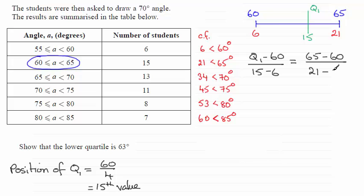So what we've got then is Q1 minus 60, all divided by 9, equals 5 over 15. And so just rearranging this for Q1, we therefore have Q1 equals 9 times 5 thirteenths, and then plus 60. And if you work this out, you get that Q1 equals 63 degrees exactly.